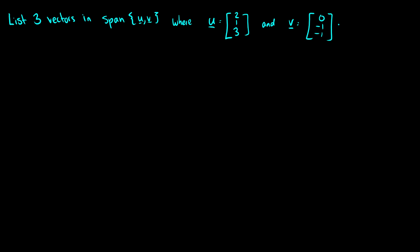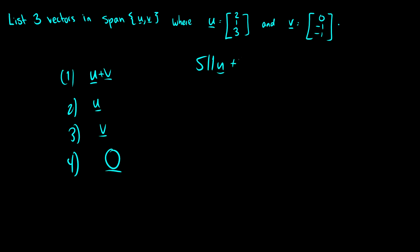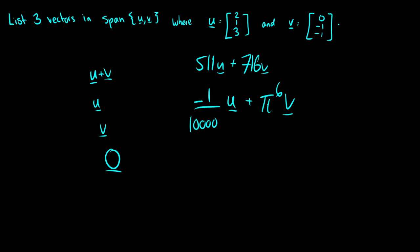As an example, suppose we have two vectors u and v and we want to list three vectors in the span. The span is all combinations of u and v. For vector 1 we could take u plus v, or we could just take u, or just v, or the zero vector since we could take 0u and 0v. Or we could take 511u plus 716v, or negative 1 over 10,000 times u and add pi to the 6 times v. All of these are different vectors in the span of u and v, which covers all linear combinations.